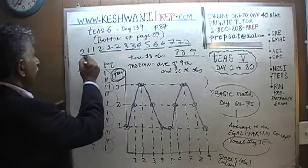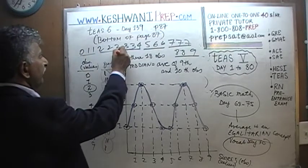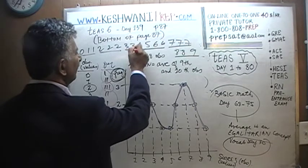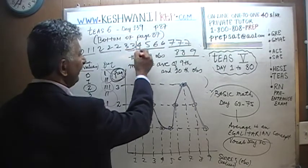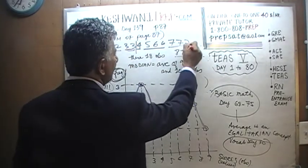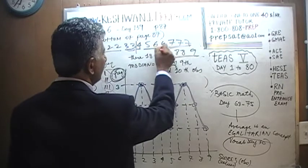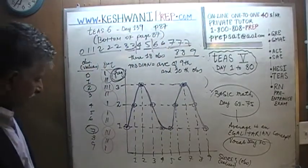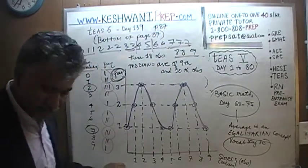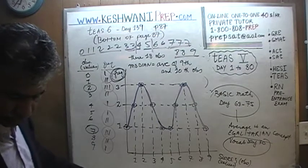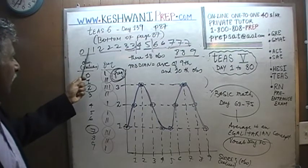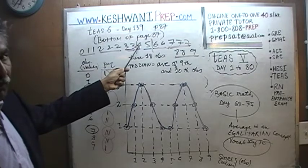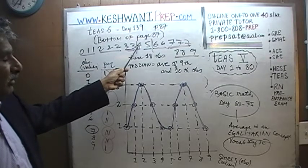There are 3 observations here, 3 observations here — that's 6. Plus 2 more is 8, up to that point. So the 9th observation: 1, 2, 3, 4, 5, 6, 7, 8, 9 — the 9th observation is 4.